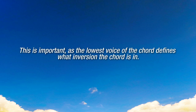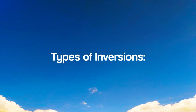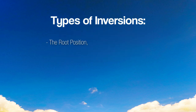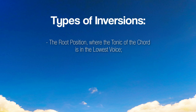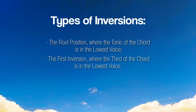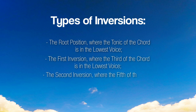This is important as the lowest voice of the chord defines what inversion the chord is in. A triad, or three-tone chord, can be in three different inversions: the root position, where the tonic is in the lowest voice; the first inversion, where the third is in the lowest voice; and the second inversion, where the fifth is in the lowest voice.